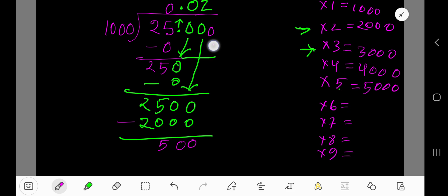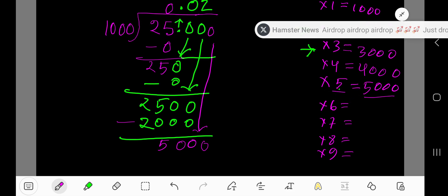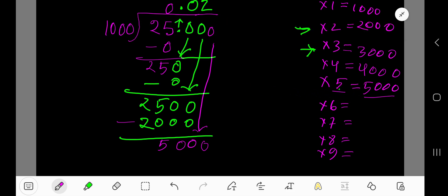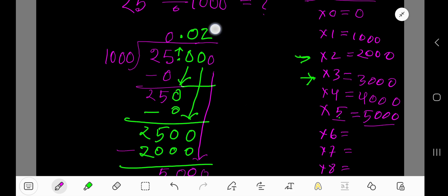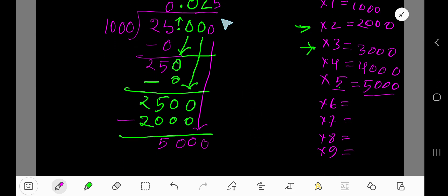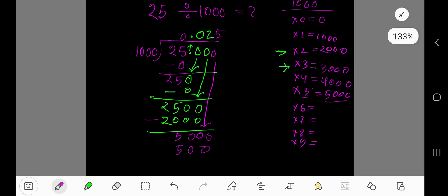I will take another 0 and bring down that 0. So 1000 goes into 5000 how many times? 5 times. So right here, 5. And 5 times 1000 which is 5000. If you subtract, you are getting 0.